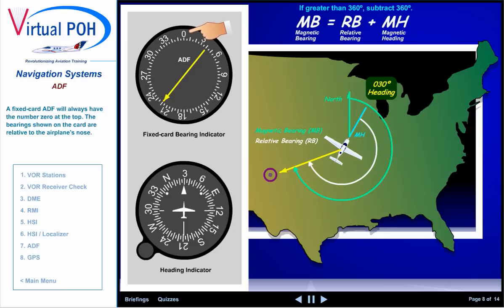A fixed card ADF will always have the number 0 at the top. The bearings shown on the card are relative to the airplane's nose. The pointer will show the relative bearing to the station — in this case, 220 degrees measured from the nose of the airplane.